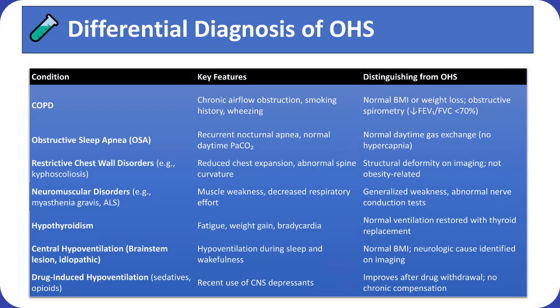The differential diagnosis of OHS includes several conditions that cause hypoventilation or sleep-related breathing abnormalities. COPD presents with airflow limitation, smoking history, and wheezing, but typically occurs in non-obese patients with obstructive spirometry findings. OSA involves nocturnal apnea without daytime hypercapnia. Restrictive chest wall disorders such as kyphoscoliosis cause reduced chest expansion and structural deformity, while neuromuscular disorders like myasthenia gravis and amyotrophic lateral sclerosis feature generalized weakness and abnormal nerve conduction.